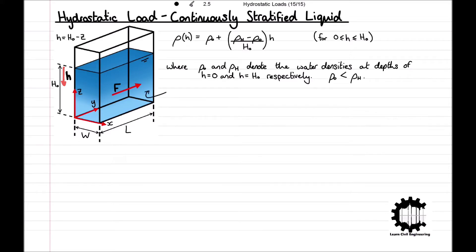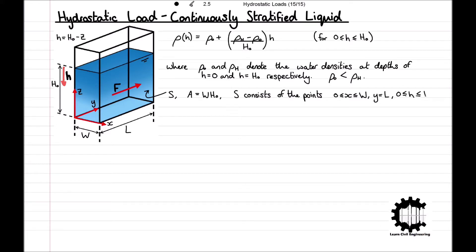Let S denote the region of the end wall surface in contact with the liquid, which has area A = W × h_0. S consists of the points from x = 0 to x = W, y = L, and h = 0 to h = h_0. The end wall is vertical and has unit outward normal vector n = −j.